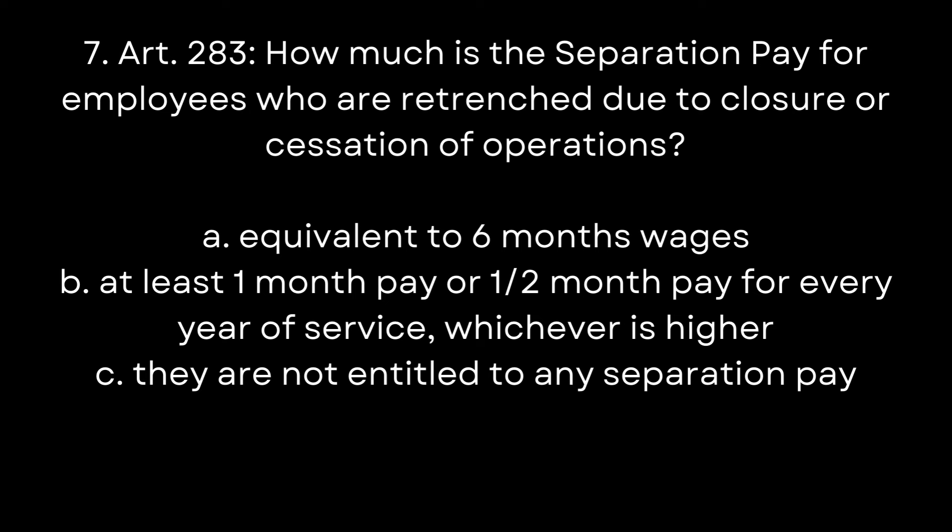Question 7. Article 283. How much is the separation pay for employees who are retrenched due to closure or cessation of operations? A. Equivalent to six months wages. B. At least one month pay or one half month pay for every year of service, whichever is higher. C. They are not entitled to any separation pay. The answer is B. At least one month pay or one half month pay for every year of service, whichever is higher.